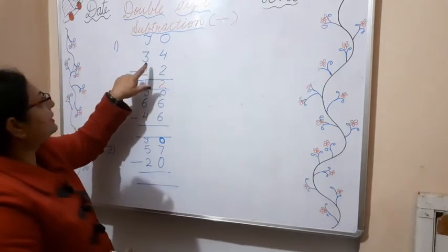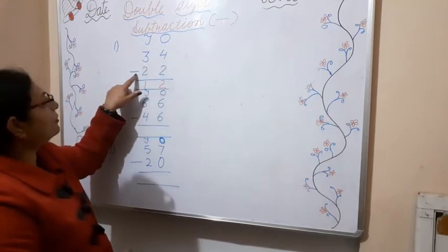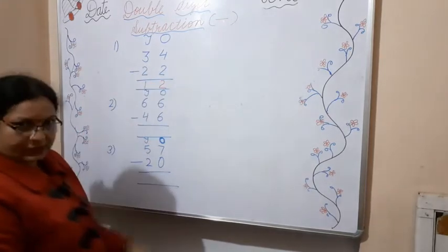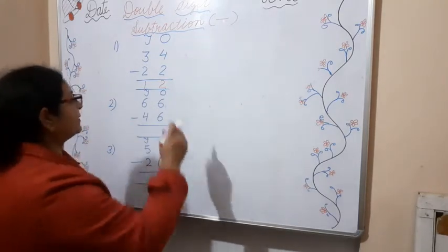So my first number is 34, and we have to subtract the number 24. So first of all, we will start from the ones side.